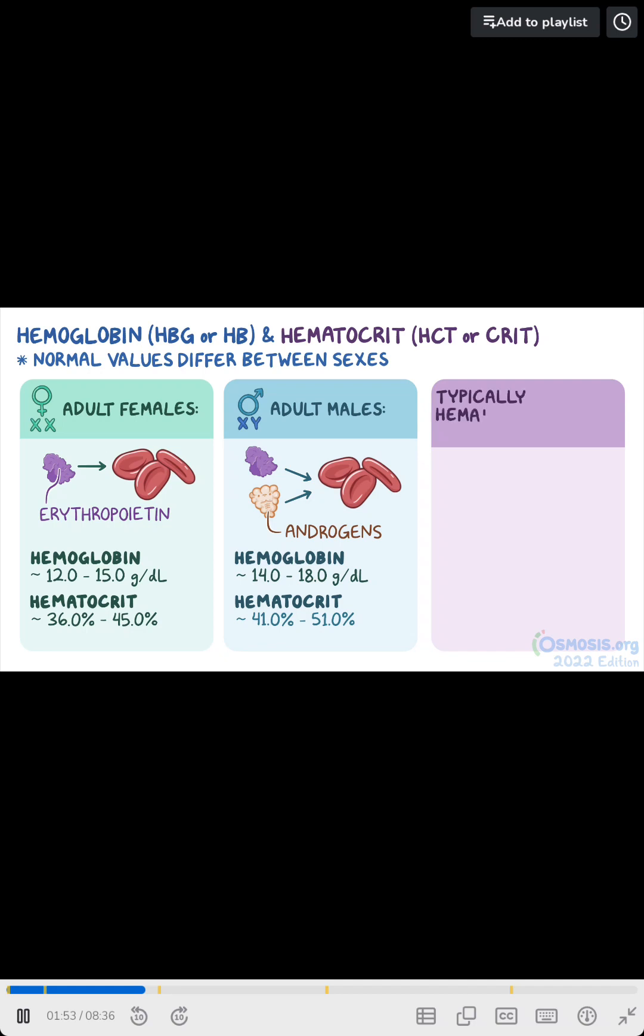Typically, the hematocrit will be about three times the value of hemoglobin. As an example, if a client's hemoglobin is 14.0 grams per deciliter, the expected hematocrit would be about 42%.